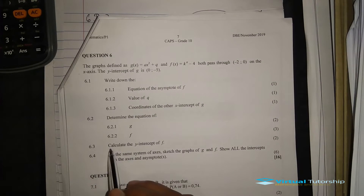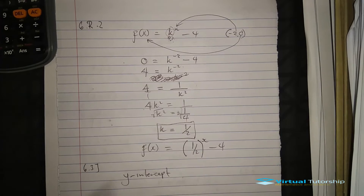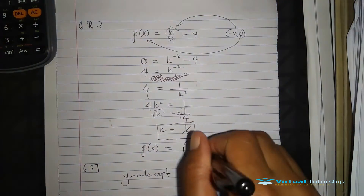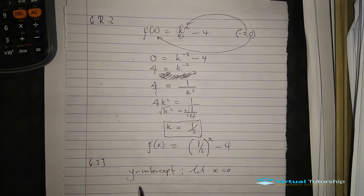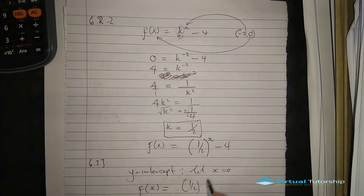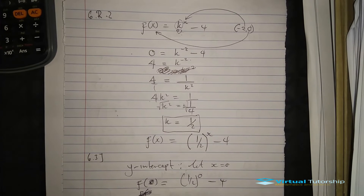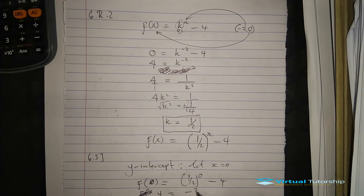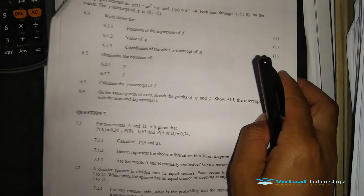6.3: Calculate the y-intercept of F. To find the y-intercept, let x equal to zero. F(0) equals one half raised to the exponent zero minus four, which equals one half to the power of negative three. That equals one minus four, giving negative three. So the y-intercept is zero and negative three.